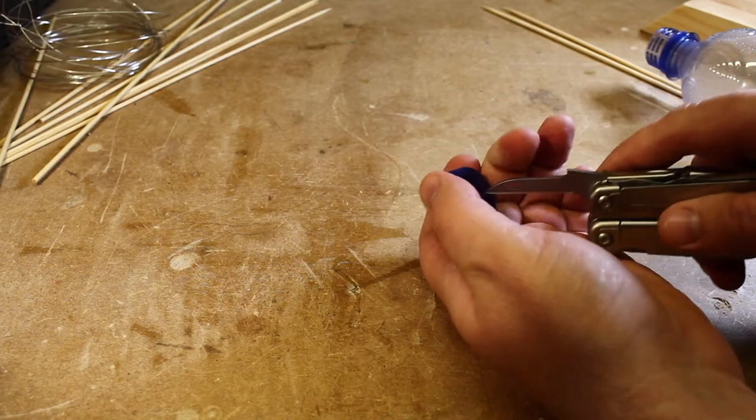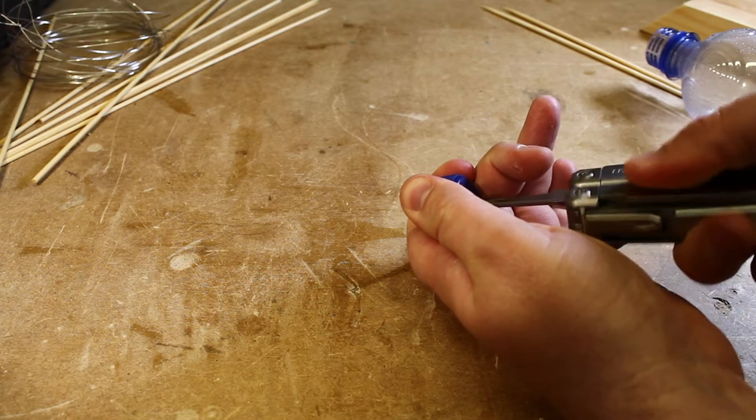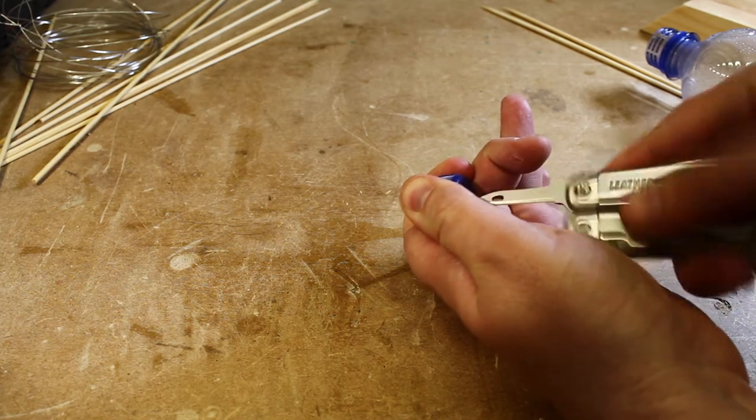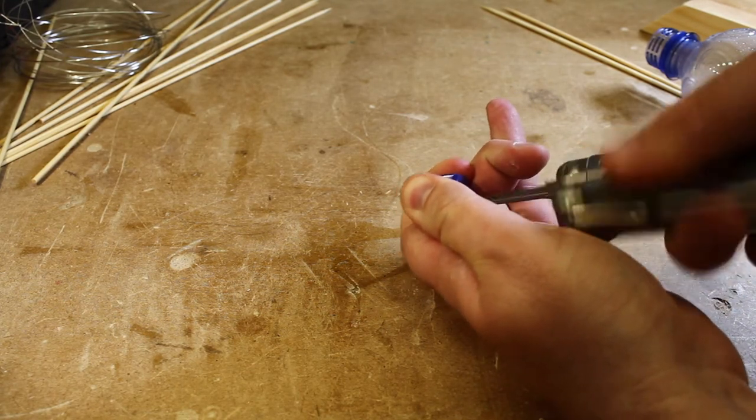Use the awl to poke a hole through the top of the bottle cap. This is where you'll pass the wire that will be used to hang the bird feeder later.